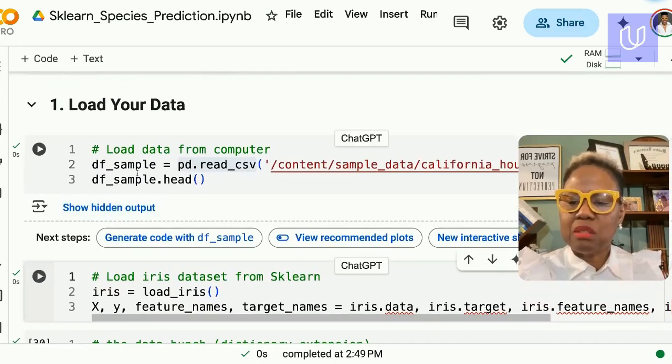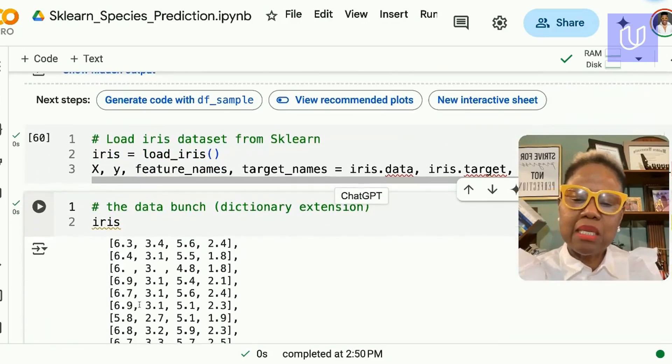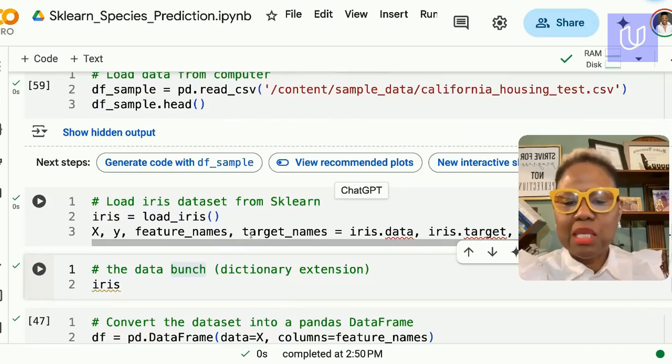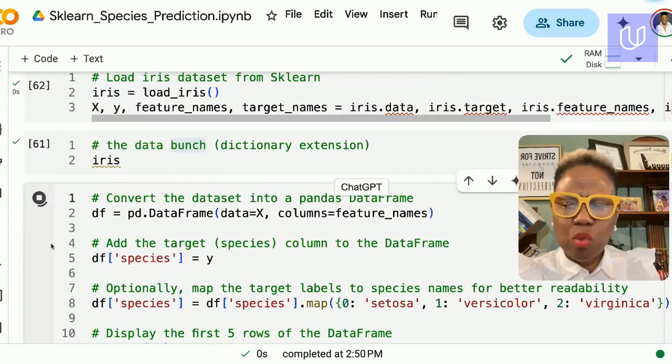Here we're using the iris dataset for predicting the species of flowers. This comes in as a data type known as a bunch. But we can extract the features and the target names and use that to build a dataframe so we can see what the data looks like.